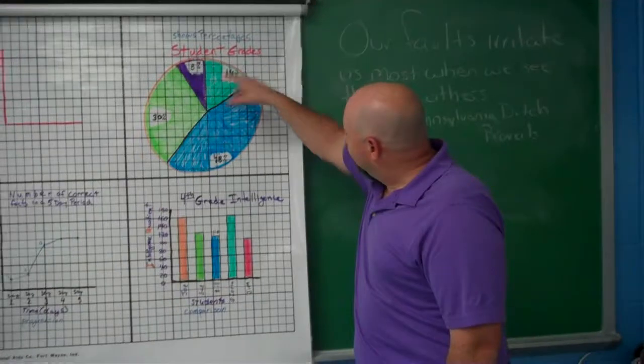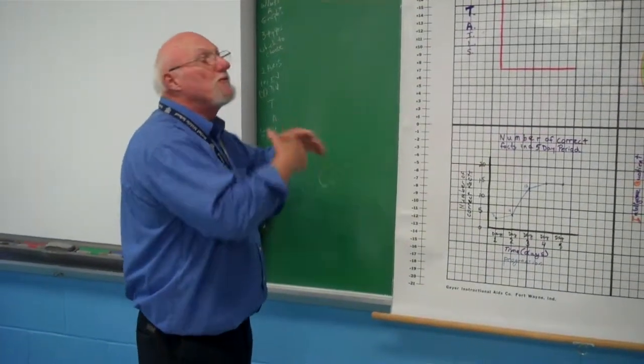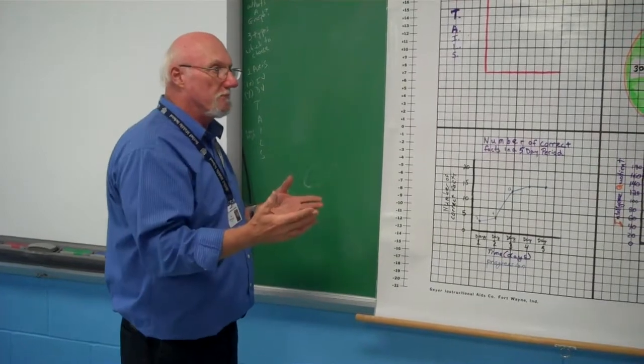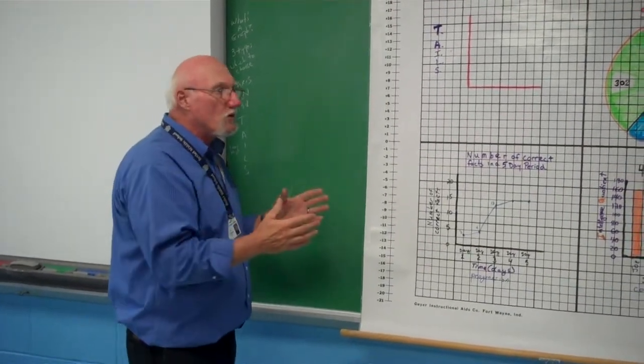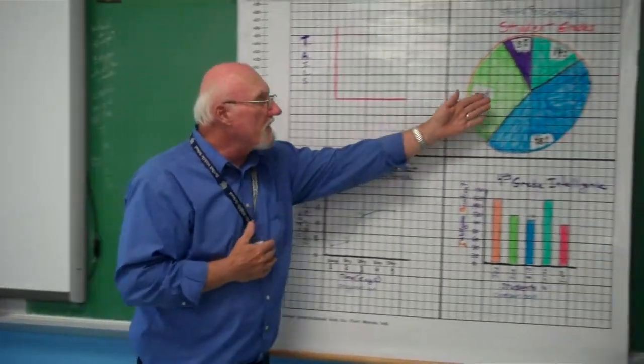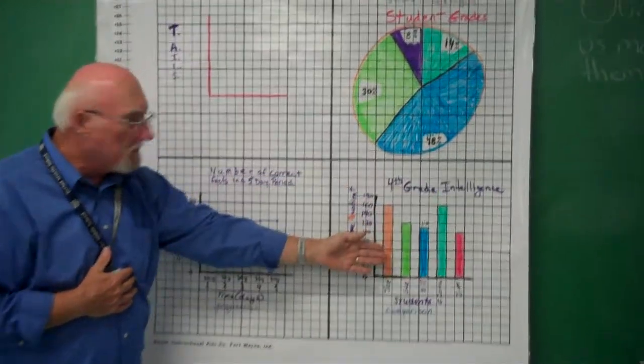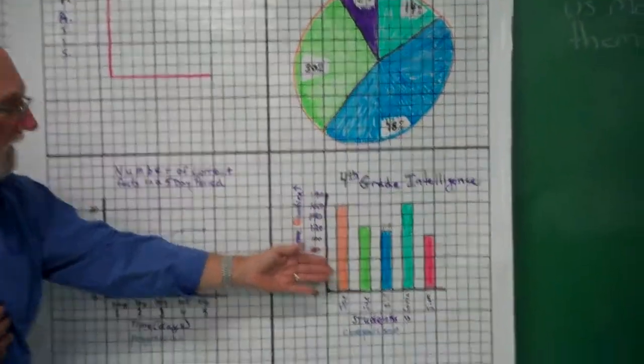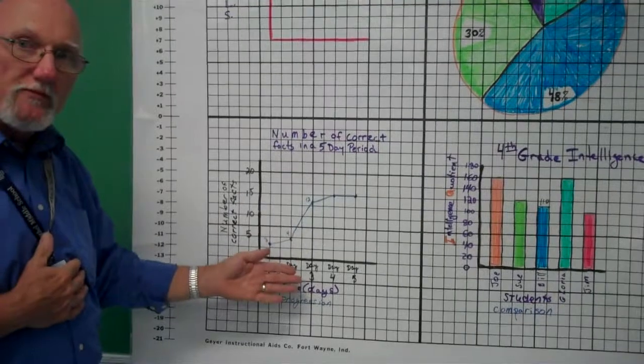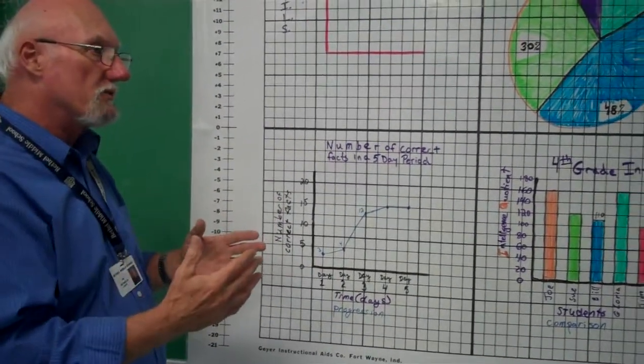That's why we have the graph paper. So graphing is a visual way to communicate. But no matter what kind of graph you use, whether it's a pie graph or a bar graph or a line graph, they all basically have the same principles.